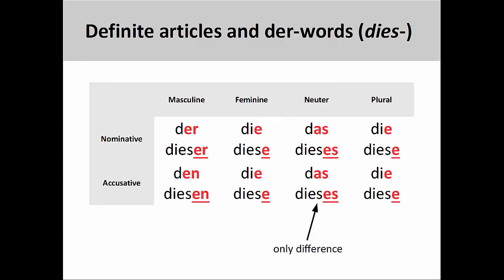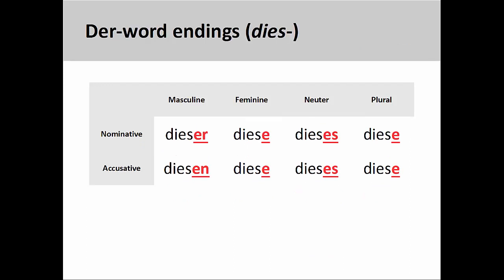As you can see on the screen, the endings for der-words are very similar to those for definite articles. The only difference you should note are the neuter nominative and accusative endings. The definite article here ends in -as, whereas der-words have an -es ending. And here is the chart from the prior slide of just dies- displayed.